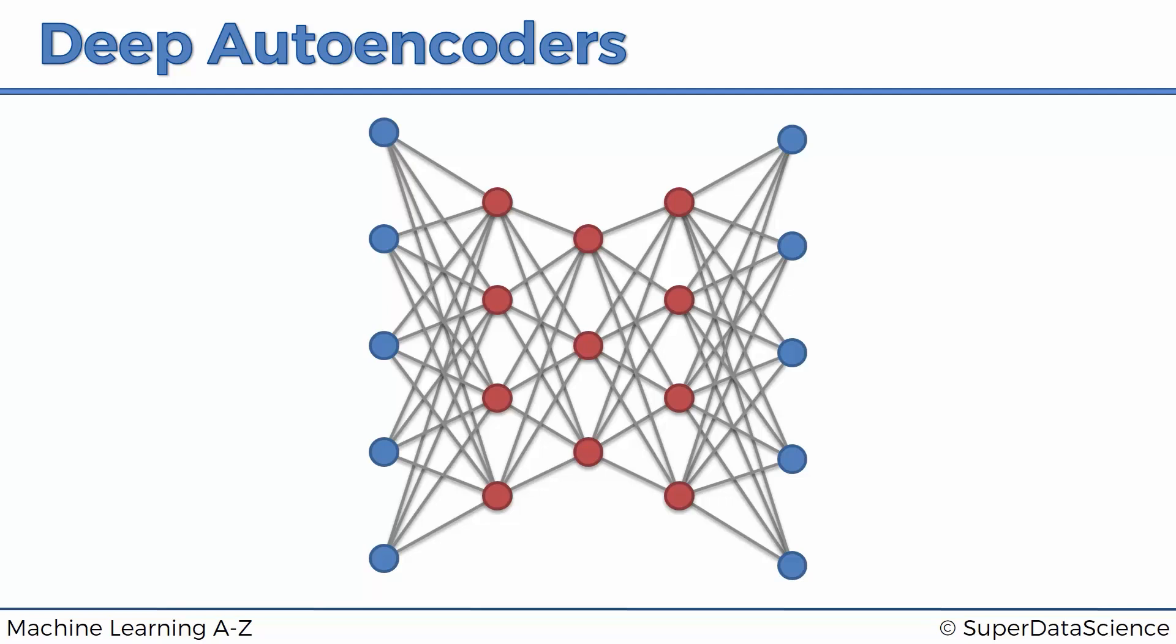So stacked pre-trained layer by layer RBMs, this is what we have here. This is our stacked autoencoder. So basically it's RBMs that are stacked, then they're pre-trained layer by layer, then they're unrolled, and then they're fine-tuned with backpropagation.